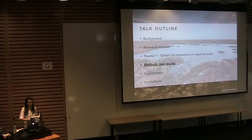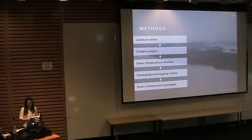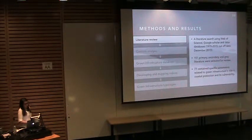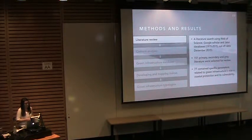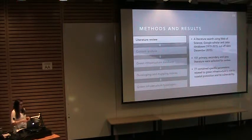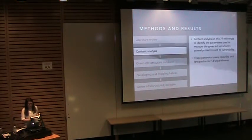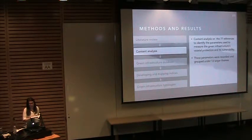I used several complementary methods throughout this study, including a literature review, a content analysis, creating a green infrastructure database, developing and mapping the indices, and also creating the green infrastructure typologies. For the literature review I used a well-known research database and searched for green infrastructure studies from 1970 to 2020. I used several keywords to limit this search and ended up with 150 references matching my search criteria, of which 77 contained specific parameters describing green infrastructure's role in coastal protection and its vulnerability.